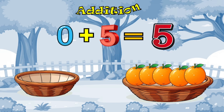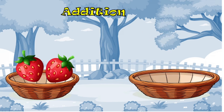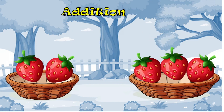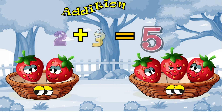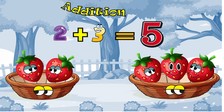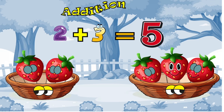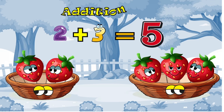These are some strawberries. How many strawberries are there? 2 plus 3 is equal to 5. 2 plus 3 is 5. This is addition.